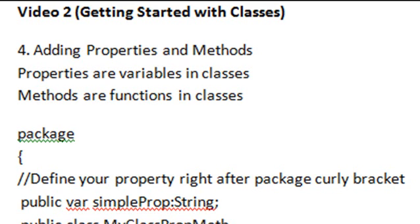The first thing we're going to do is add properties and methods. You're probably asking, well, what's a property, what's a method? Those are real fancy names for variables and functions. So, in a class, a variable is called a property, and a function is called a method.